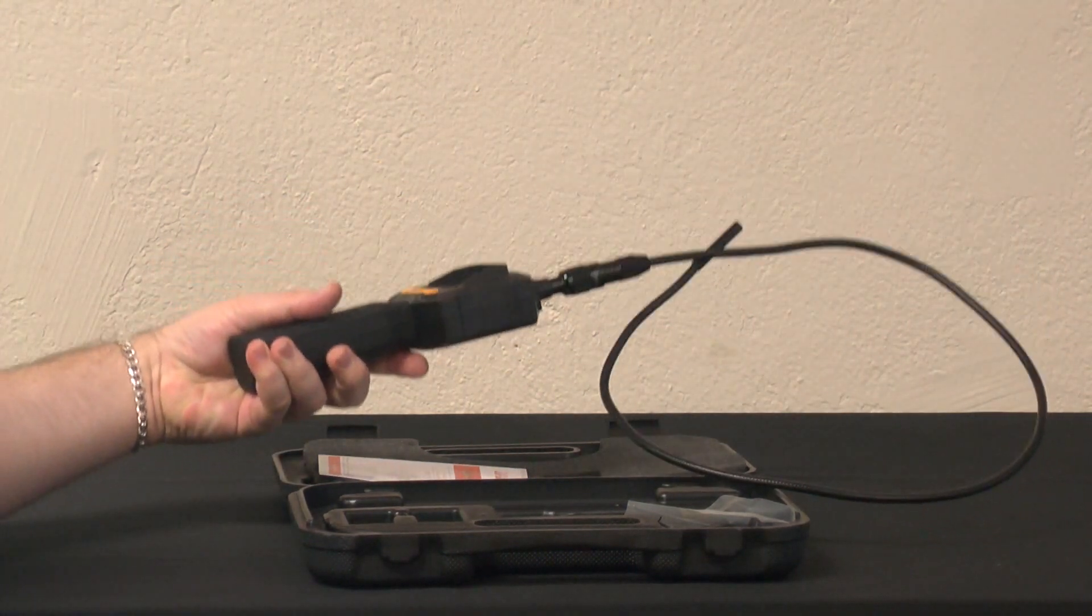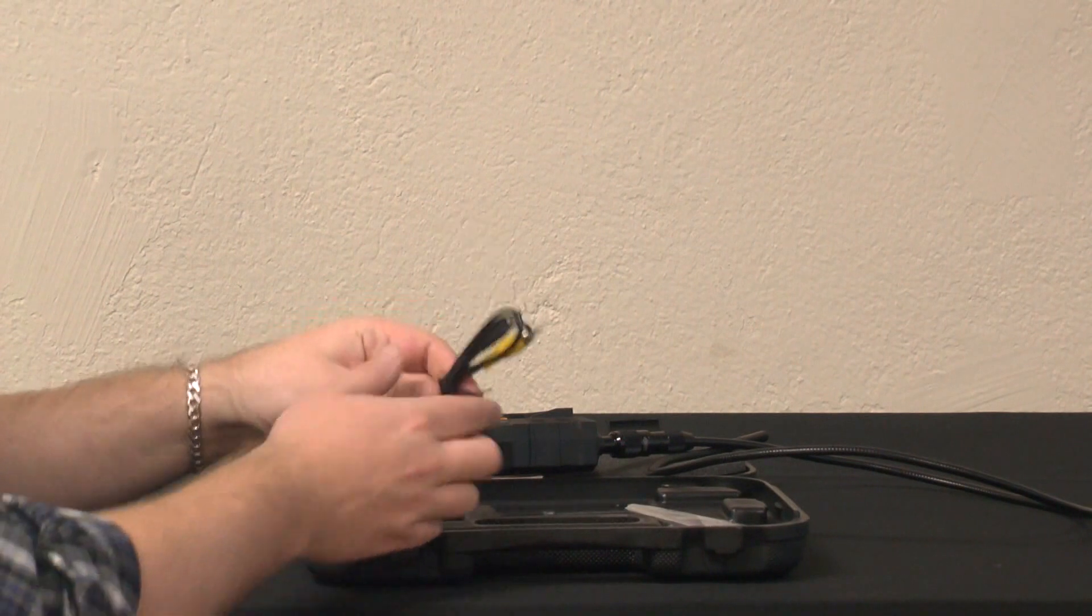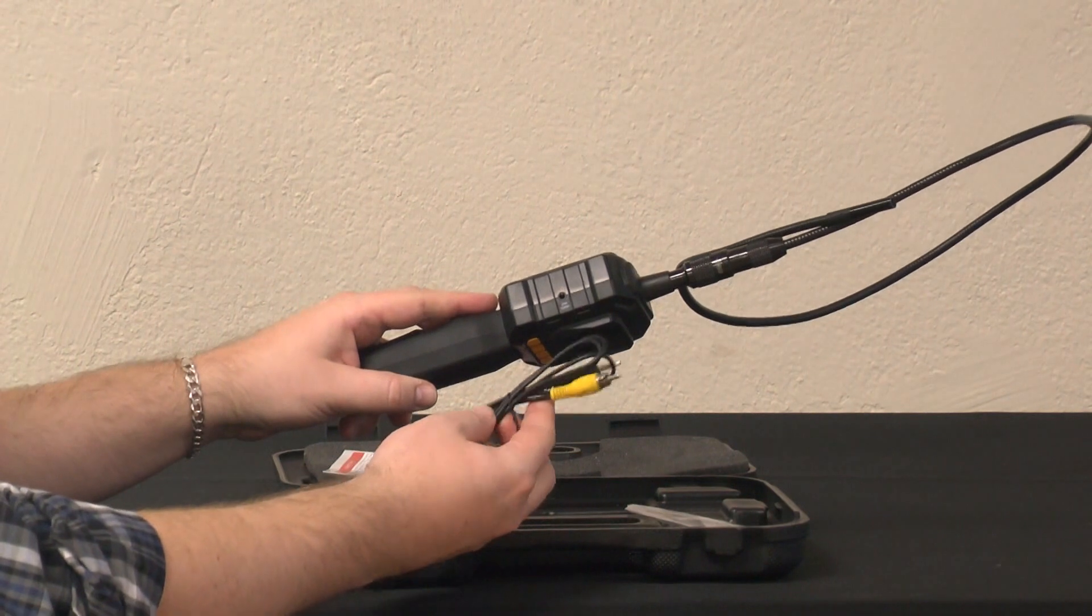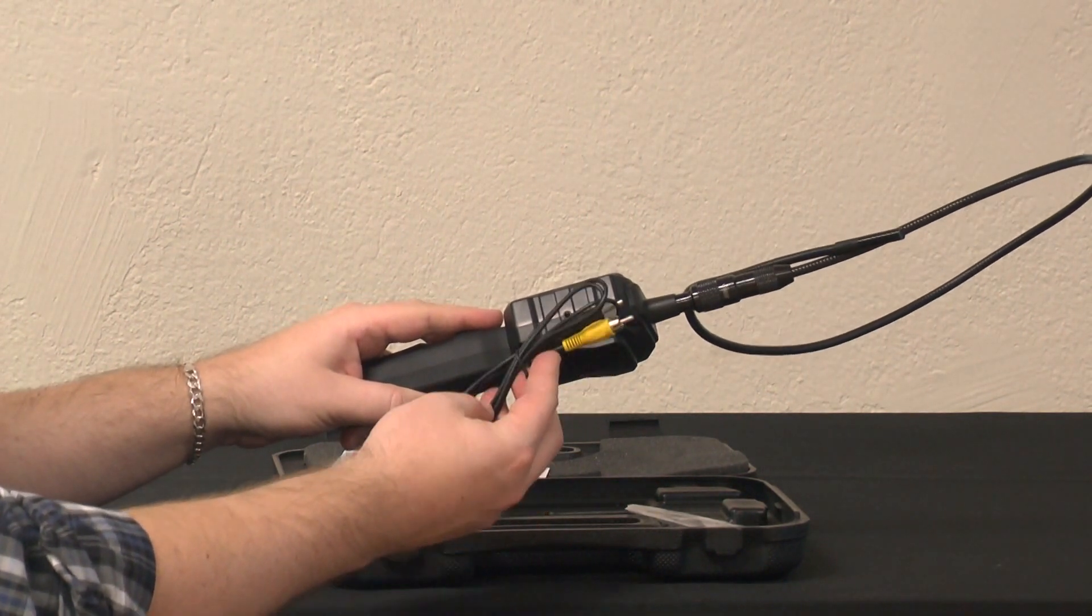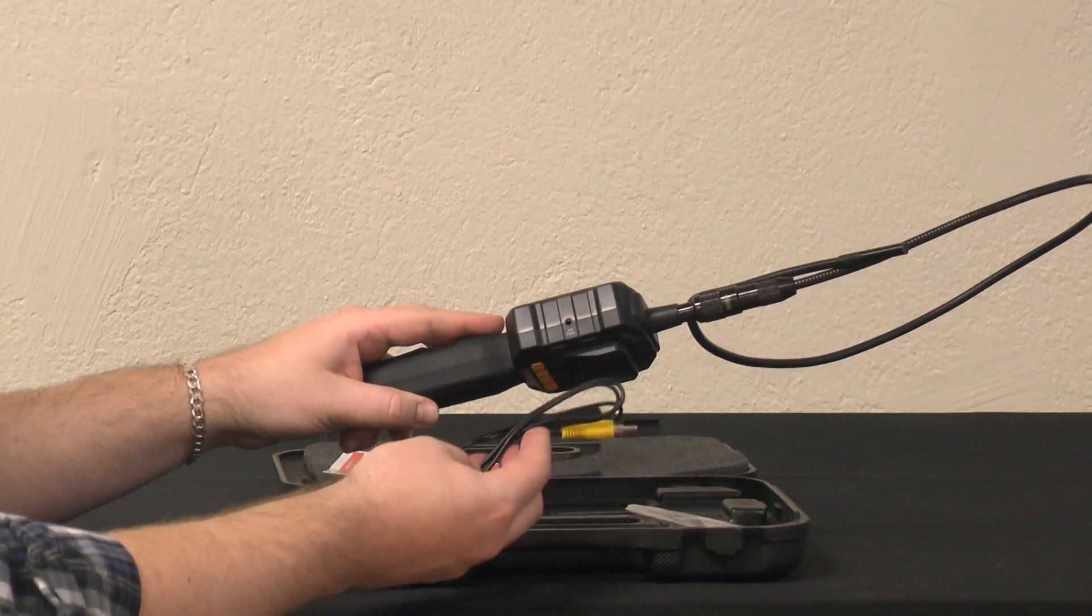Now also what's included inside the case, you have a video out cable and you'll notice on the unit that there is a video out port. So if you do need to record what you're looking at through the video inspection camera for a client, you can do that fairly easily.